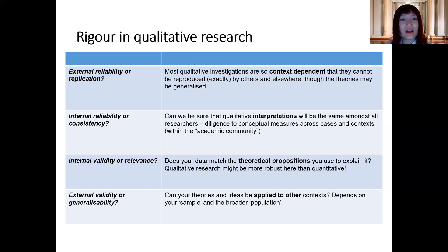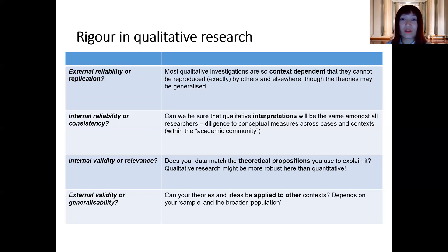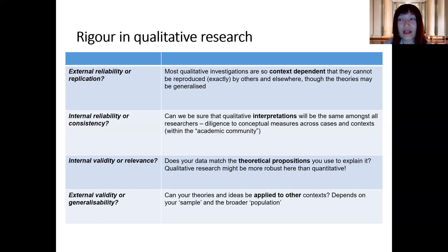The second dimension is internal reliability, which is about the result of your research — whether the result would be consistent. So let's say the design is replicable, meaning other researchers can follow the same procedure and ask the same questions. After they have finished their data collection, when it reaches the actual results, whether they can get the same result — that is internal reliability. Whether they would get the same answers if they also interview the same type of people that you have interviewed.